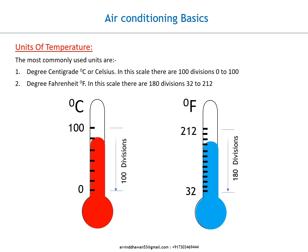Units of temperature — the most commonly used units are: 1. Degree Centigrade or Celsius — in this scale there are 100 divisions, from 0 to 100. 2. Degree Fahrenheit — in this scale there are 180 divisions, from 32 to 212.